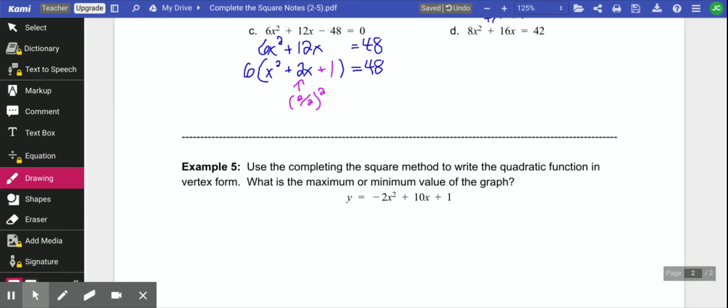But here's where things change. That's not really a 1, because notice if you distributed the 6, if that 6 gets distributed everywhere, 6 times 1, that's actually a 6. I added a 6 to that side, which means I have to add a 6 over here. So if you have factored out an A, make sure you multiply those together, and that's what you're adding over on this side.